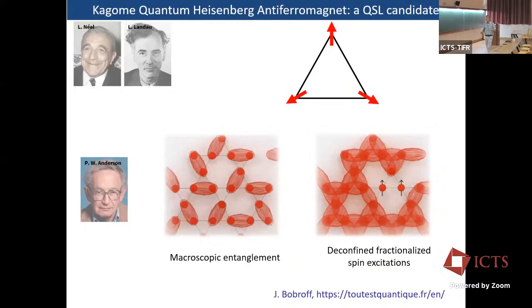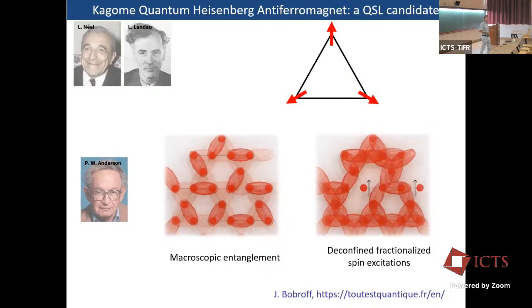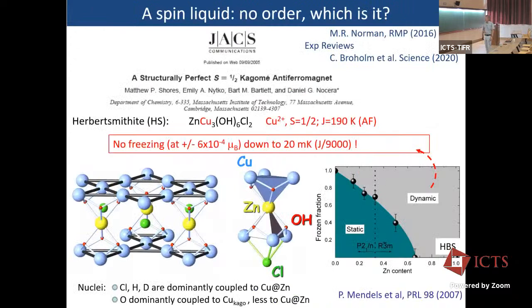Macroscopic entanglement, as you can see on the right, on the left side. And then they can find fractionalized spin excitations. So these are key features: macroscopic entanglement and confined fractionalized spin excitations that we are looking for on this Kagome Heisenberg anti-ferromagnet. The field had kept silent for years and years, since the beginning of this story in the 90s, until this compound, the Herbert Smith site, was discovered.